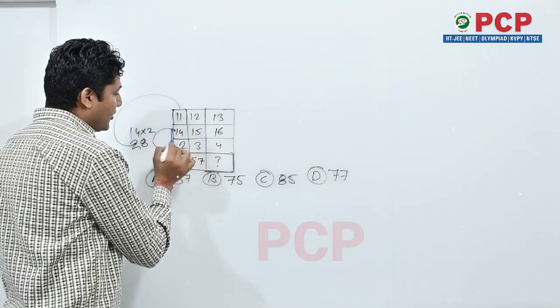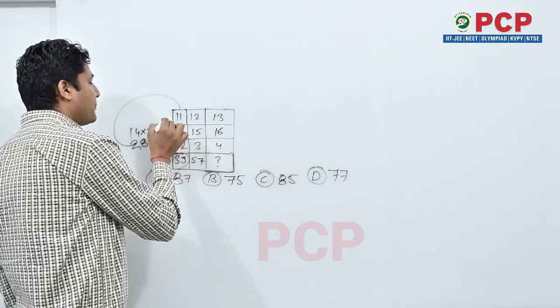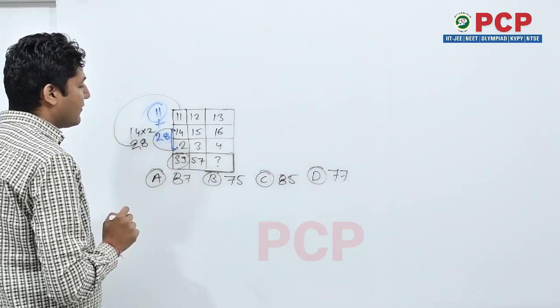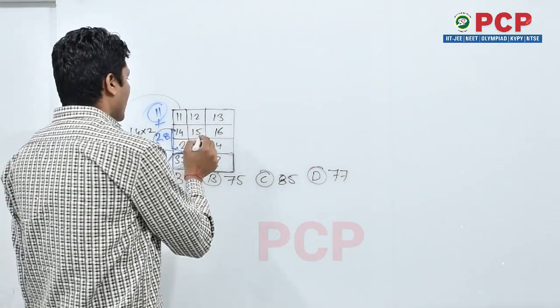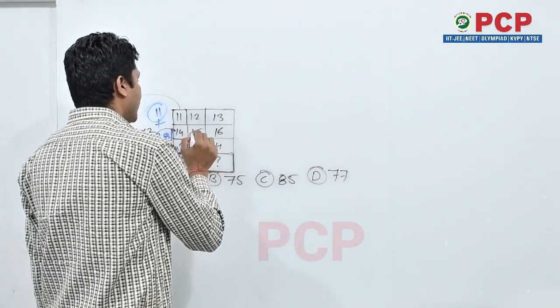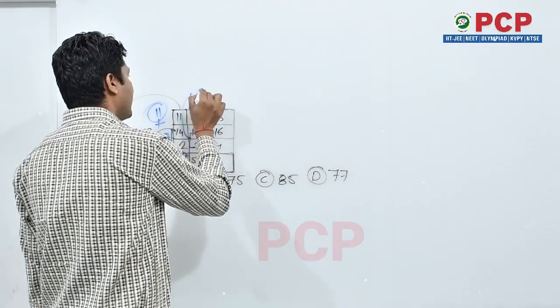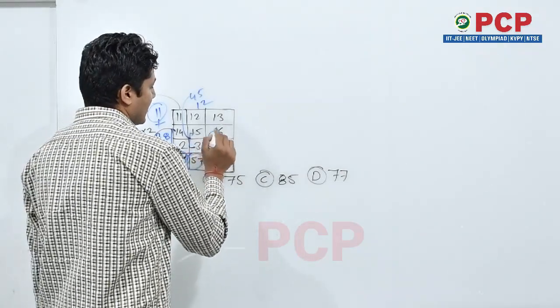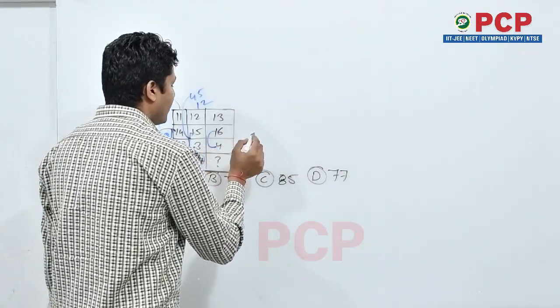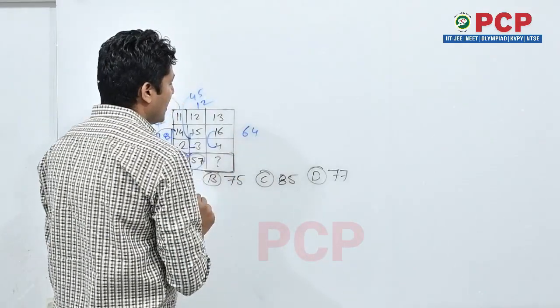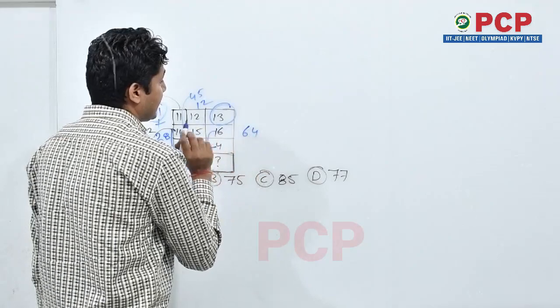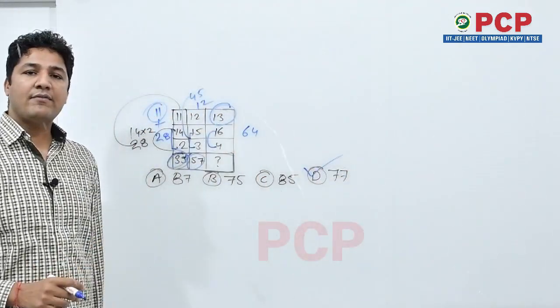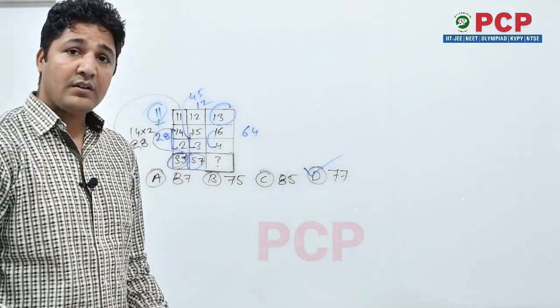I am again repeating the thing, 14 into 2 is 28, 28 plus upper side of letter that is 11, 28 plus 11 that is 39. Again 15 into 3 that is 45, 45 plus 12 that is 57. Now 16 into 4 is 64, 64 plus 13 that is 77. Means 77 will be your answer.